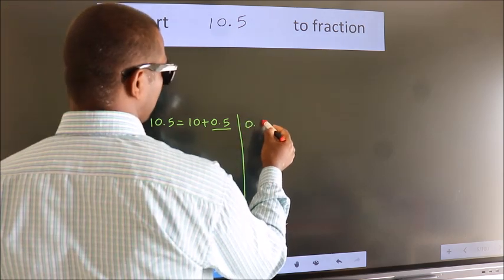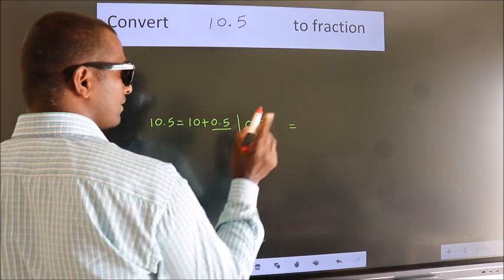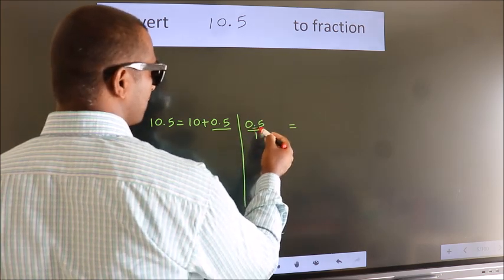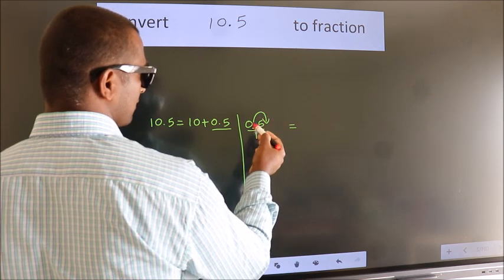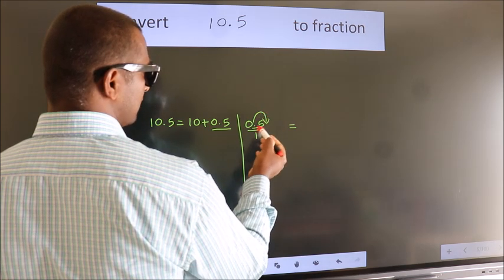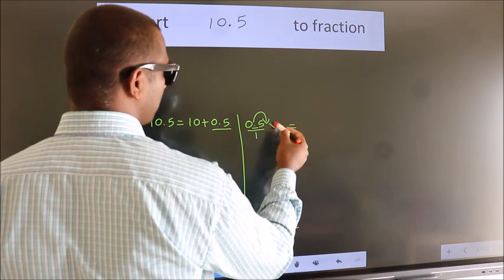So 0.5. To convert to fraction, we have to move this decimal after one number. To move this decimal after one number, multiply it with 10.